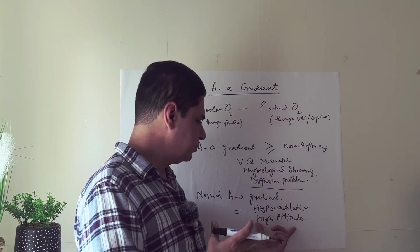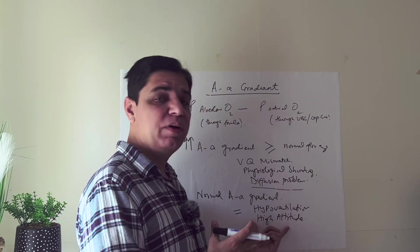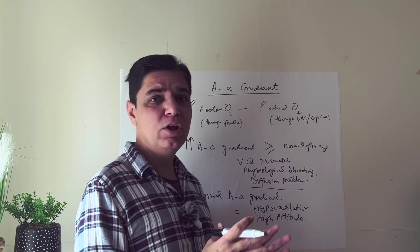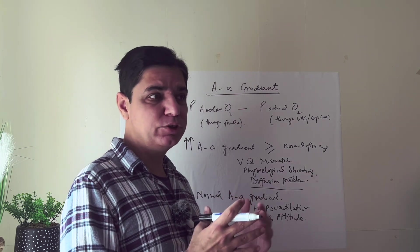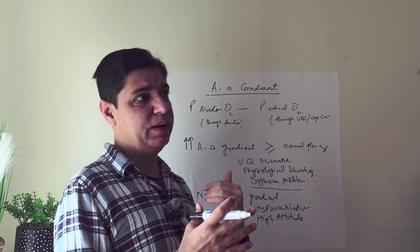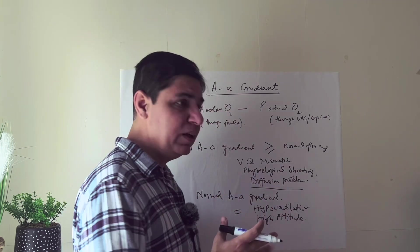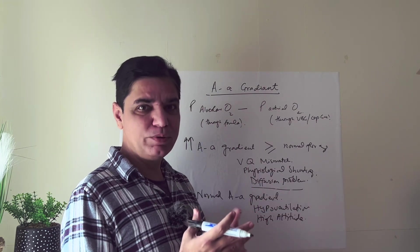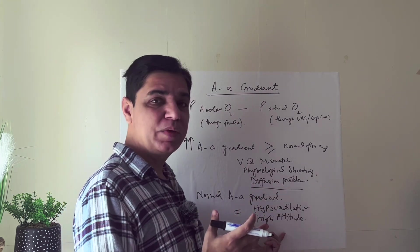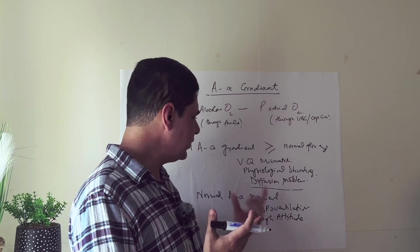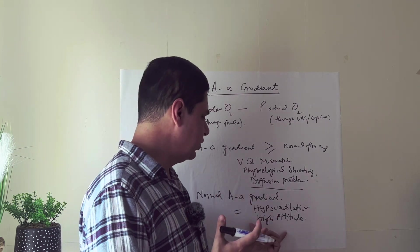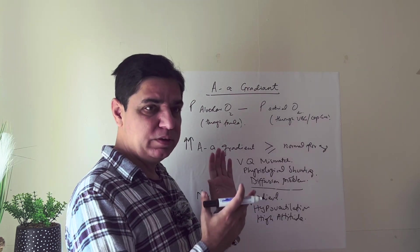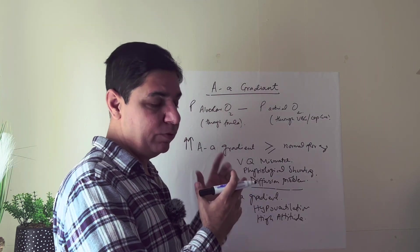Another scenario with hypoxemia and a normal AA gradient is high altitude. People not acclimatized to high altitude who suddenly move to a hill station will experience low oxygen because of the reduced atmospheric oxygen. Their body gets low oxygen, resulting in hypoxemia with a normal AA gradient.